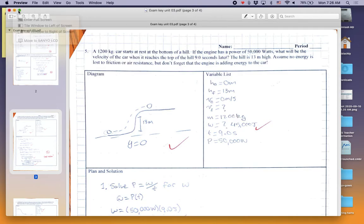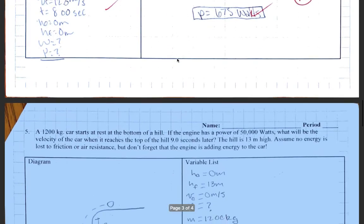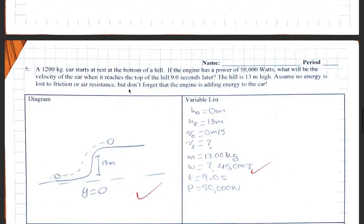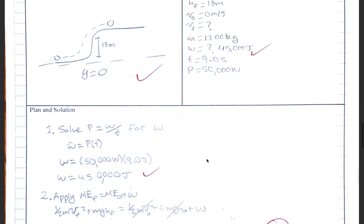On number five, we have a car which starts at rest at the bottom of the hill, and it goes up the hill, and when it gets to the top, nine seconds later, I wonder how fast it's going. So the thing here to realize is that this 50,000 watts is the power. So step one is going to use the power and the time to find the work, the energy transferred to the car from the engine. So that's the first step, and it's 450,000 joules.